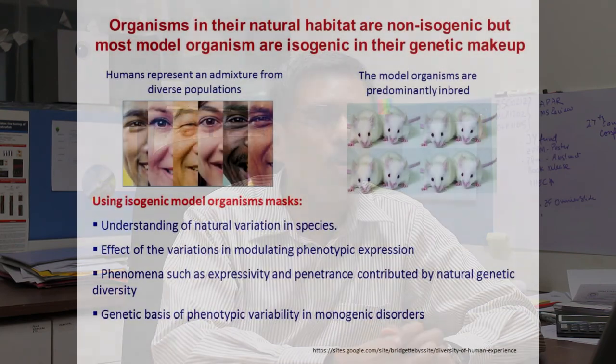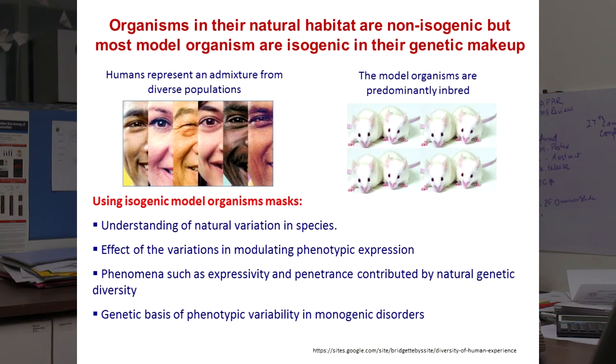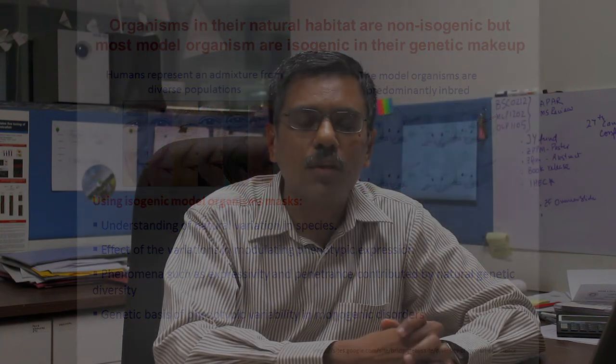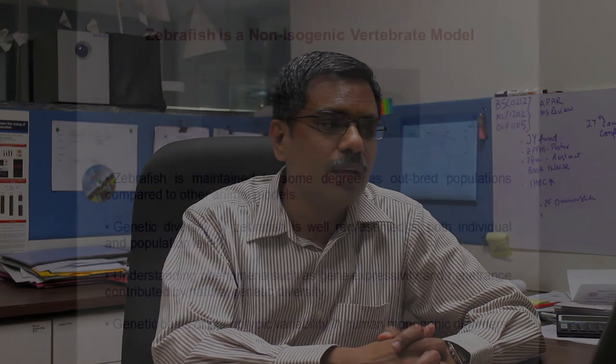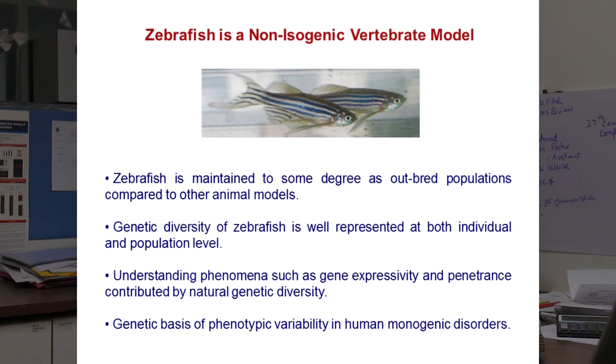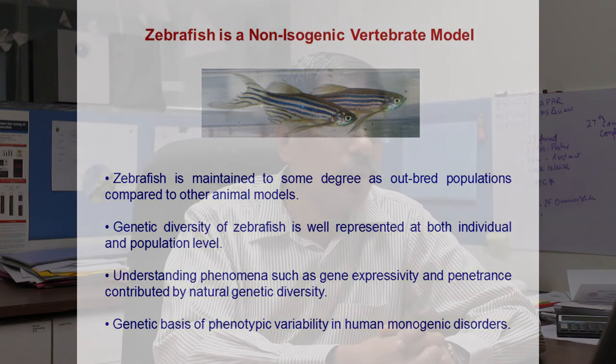Zebrafish has one more unique property: it is a non-isogenic model organism. Unlike most model organisms such as mice or rats, which have isogenic clonal lines, zebrafish are not identical in their genetic makeup — they are more like humans. Studying wild populations of zebrafish is important because they represent a closer approximation to human genetic makeup and diversity, making it scientifically important to understand expressivity, penetrance, and phenotypic variability contributed by natural genetic variation.